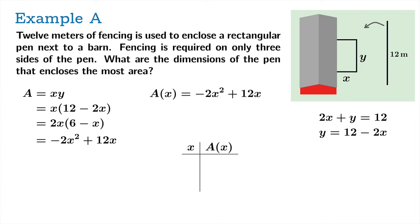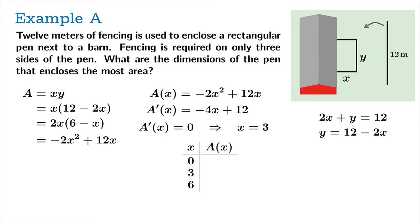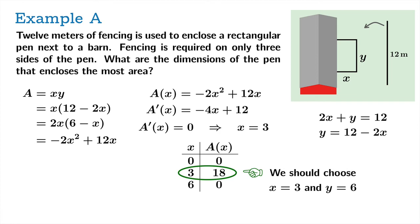We calculate the derivative as negative 4X plus 12, set it equal to 0, and find X equals 3 as our only critical number. Evaluating the function at the critical number and both endpoints: the values at the endpoints are 0, and the value at X equals 3 is 18. The closed interval method guarantees that 18 is the largest value. So we choose X equals 3, and from the constraint, Y equals 12 minus 2 times 3 equals 6. The dimensions of the pen with the largest possible area are 3 by 6.